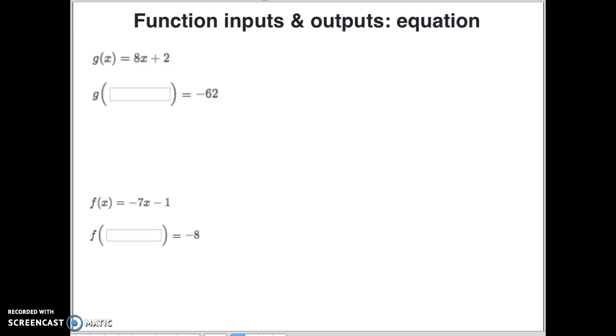So here's what you're doing in this one. When they say g of x equals 8x plus 2, and then they tell you that they want to know the answer of what does x equal to get you to negative 62.